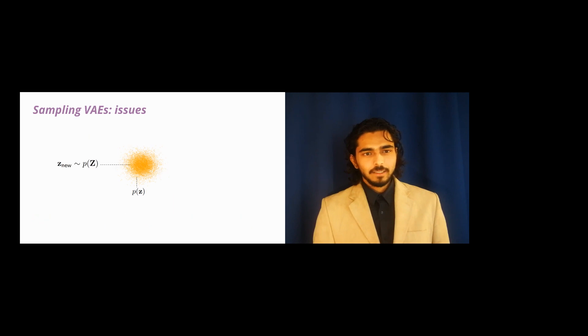After training, to generate a sample, we draw a latent code from the prior, and then we draw a new sample from the decoder. This assumes that the prior exactly matches the aggregated posterior, like so. However, this hardly happens in practice.